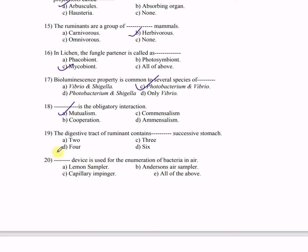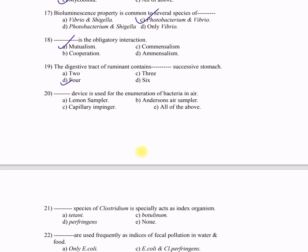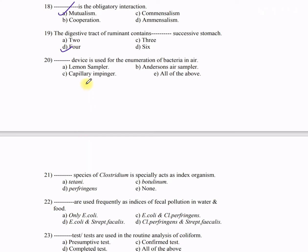Question 19: The digestive tract of ruminants contains dash successive stomachs — A) 2, B) 3, C) 4, D) 6. The correct answer is 4. The four stomachs are called rumen, reticulum, omasum, and abomasum.